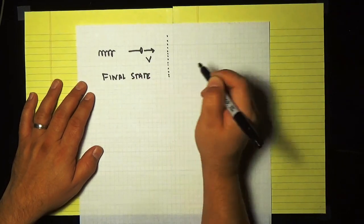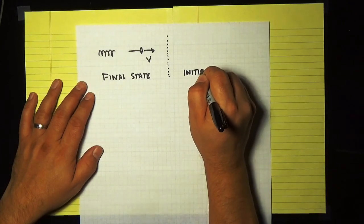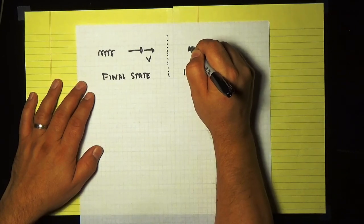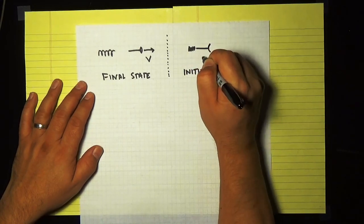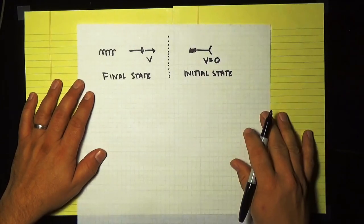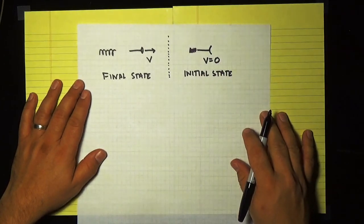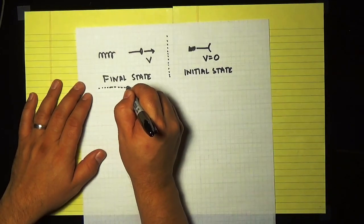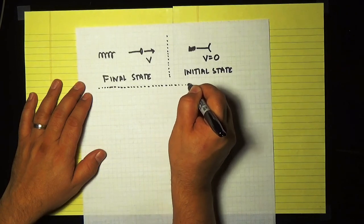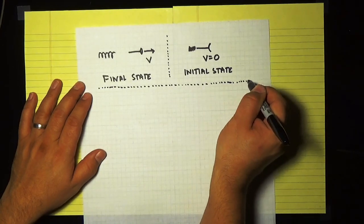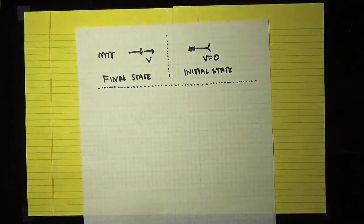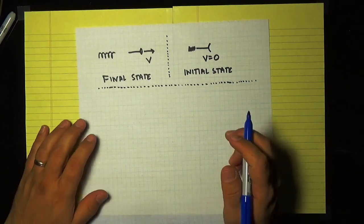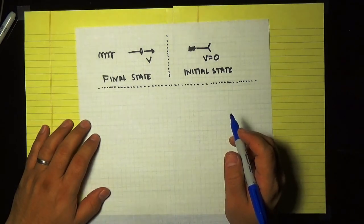And our initial state is going to be with the spring completely compressed and the dart not moving. The dart has a speed V equal to zero. So the importance of distinguishing these two states is this is what is ultimately going to allow us to conserve energy. Because we've chosen states where it's very easy to completely identify all the energy as being either kinetic energy or being totally potential energy.